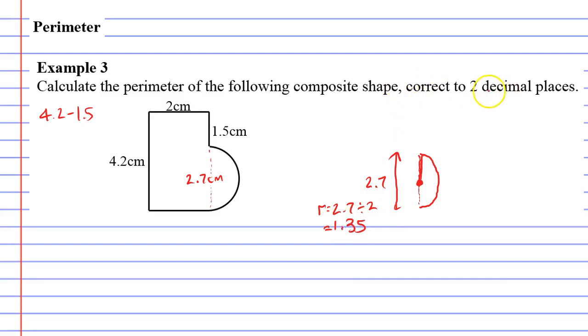Now notice that we're trying to calculate this correct to two decimal places. So what we're going to do is we're going to take our circumference formula, which is 2 pi r. And because it's really obvious that this is half of the circle, we know that we've just got to put half out the front here.